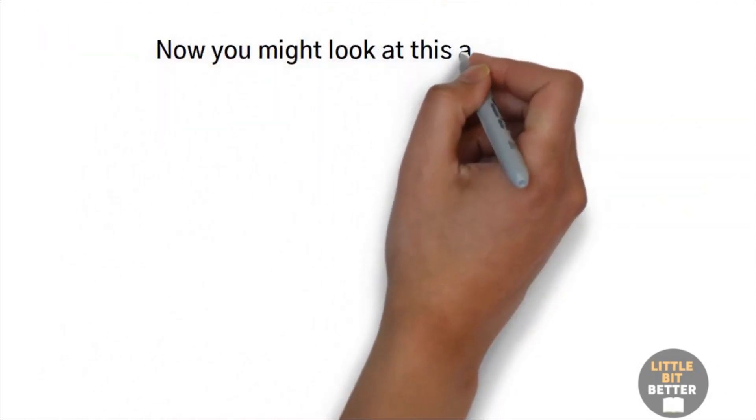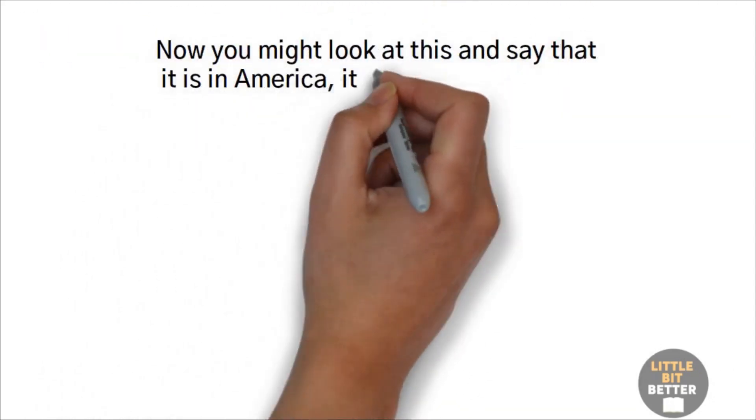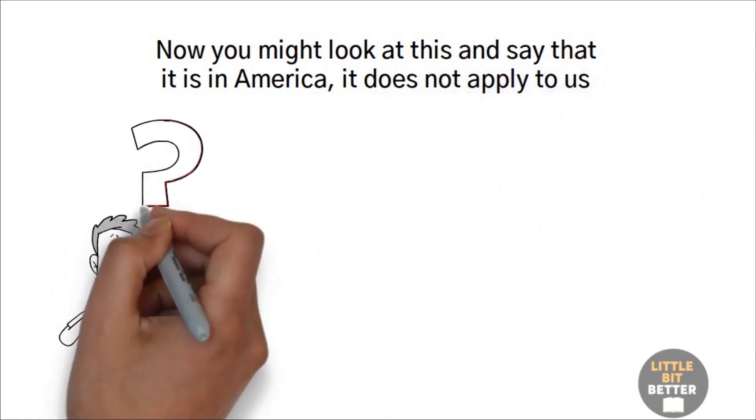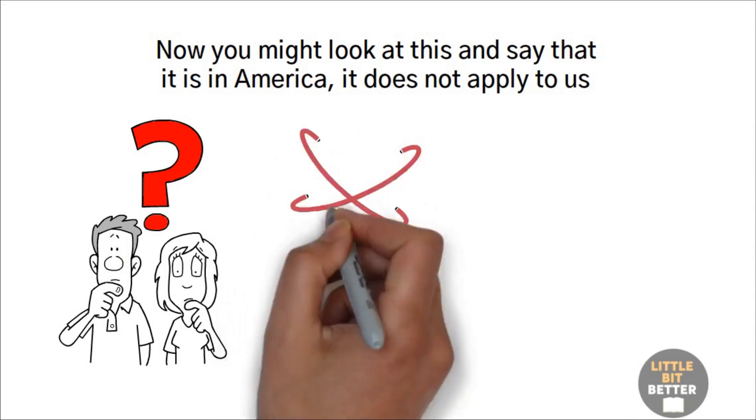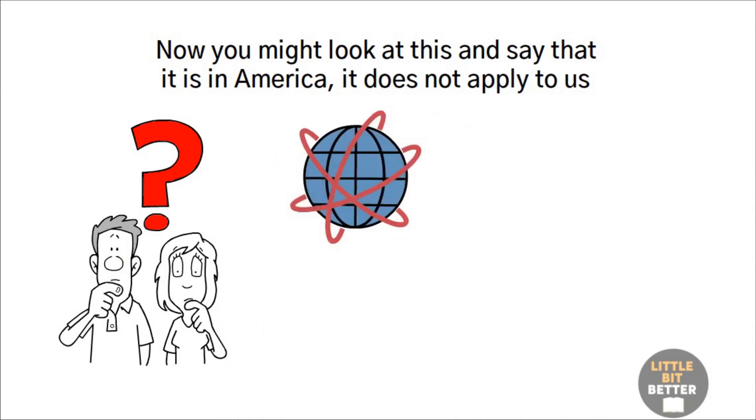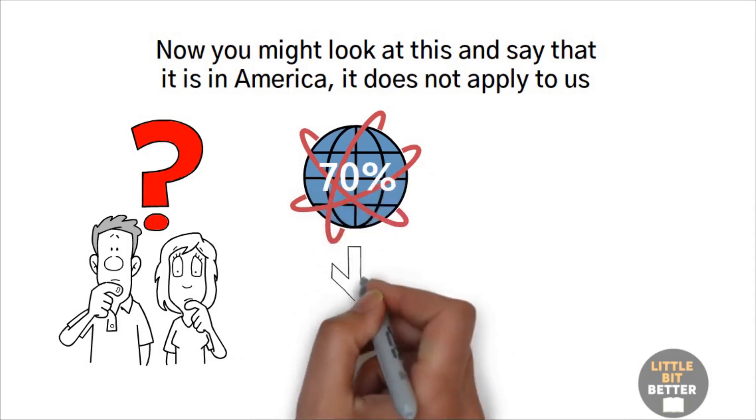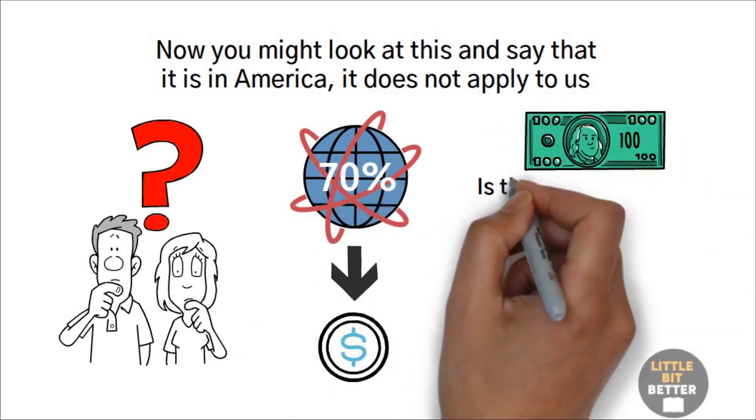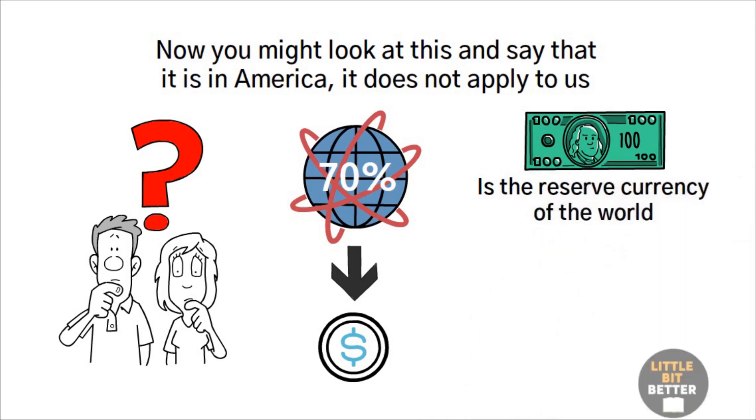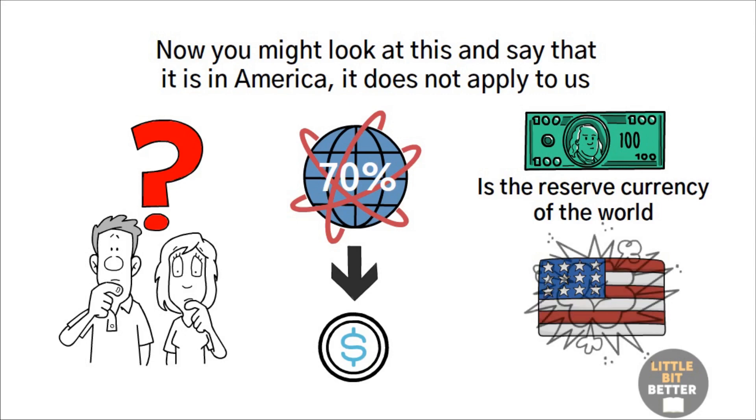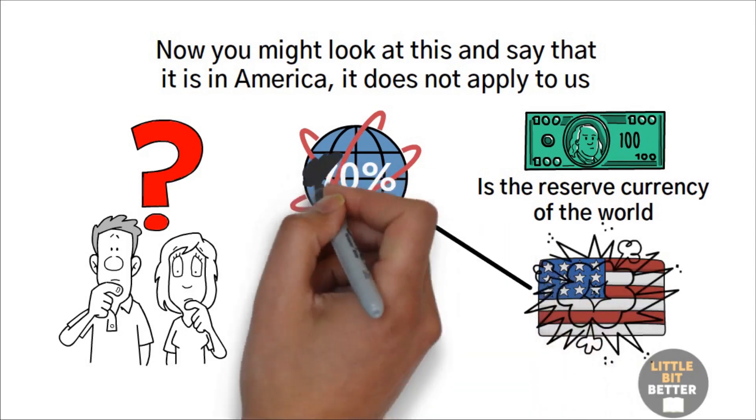Now you might look at all this and say that it is in America. It does not apply to us. Well, I think this kind of thinking would be too naive. The world economy is tied together more strongly than ever. Kiyosaki says that around 70% of world currencies are held as U.S. dollars. The U.S. dollar is the reserve currency of the world. You don't have to be an economics professor to understand that if the U.S. goes down, the world goes down with it.